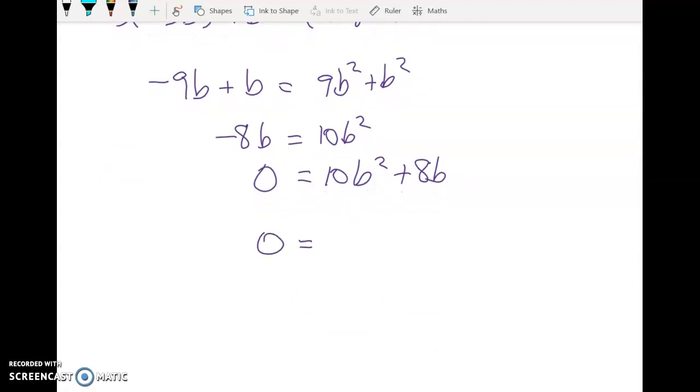0 is equal to b. Let's take out a common factor. 2b times 5b plus 4 fully factorizing that. So that gives me two solutions, right? b is equal to 0 or b is equal to negative 4 fifths.